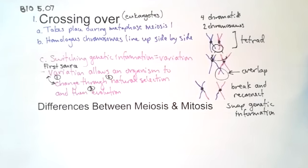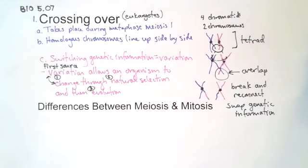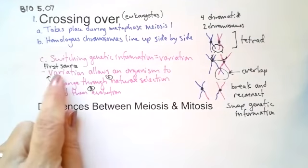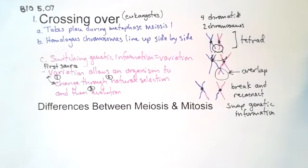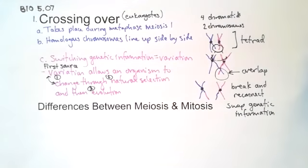So we really can't emphasize crossing over and the importance of crossing over enough to show that this is where we're going to get our change. So and that's again, that's in meiosis, and that is in eukaryotes. So let's take a look in the next video on how prokaryotes do this.